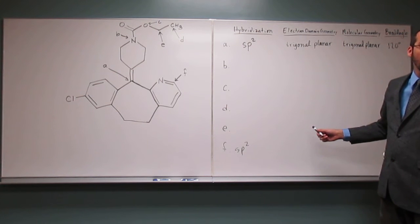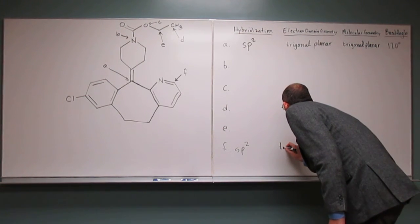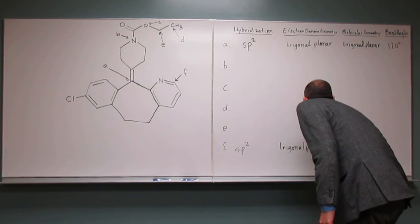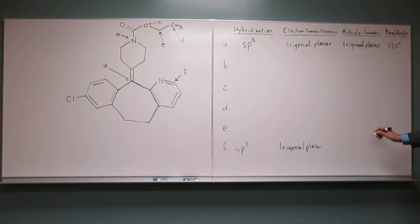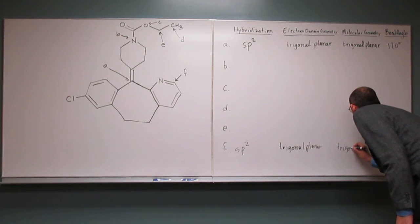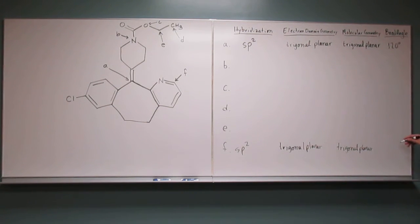Okay, what's the electronic domain geometry? Trigonal planar. Trigonal planar. Okay, the molecular geometry? Trigonal planar. And then the bond angle? 120. 120, very good. So you see that? Whenever it's like that, that's the bond angle.